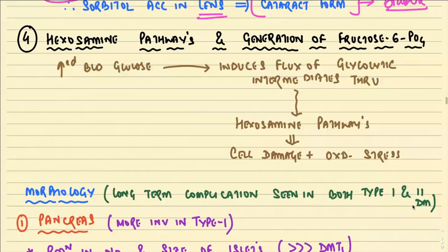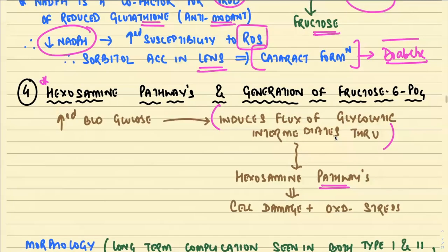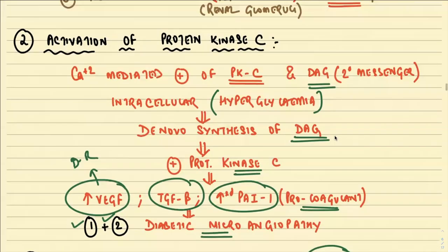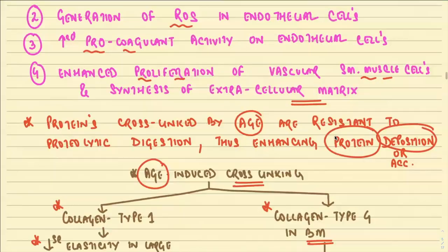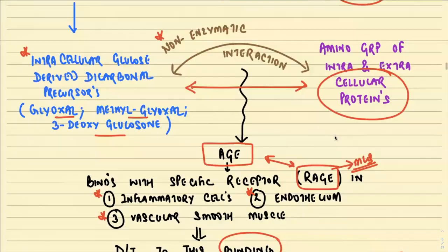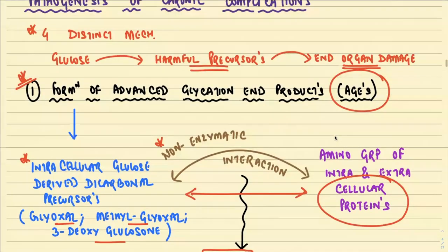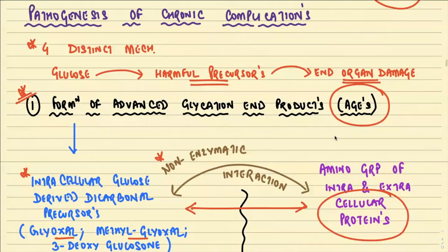The fourth mechanism is the hexosamine pathway and generation of fructose-6-phosphate. Excessive blood glucose induces flux of glycolytic intermediates through hexosamine pathways, leading to cell damage and oxidative stress. These are the four important mechanisms of chronic complications of diabetes mellitus.